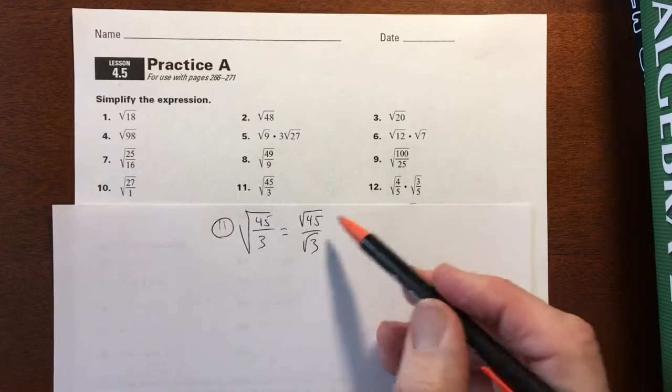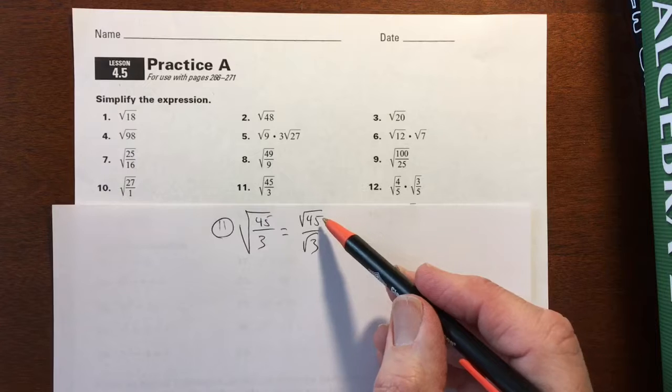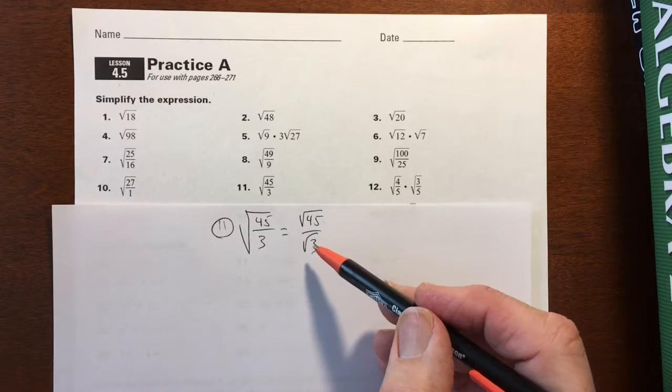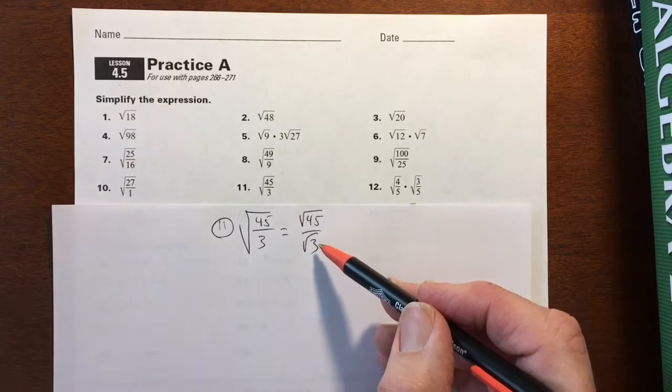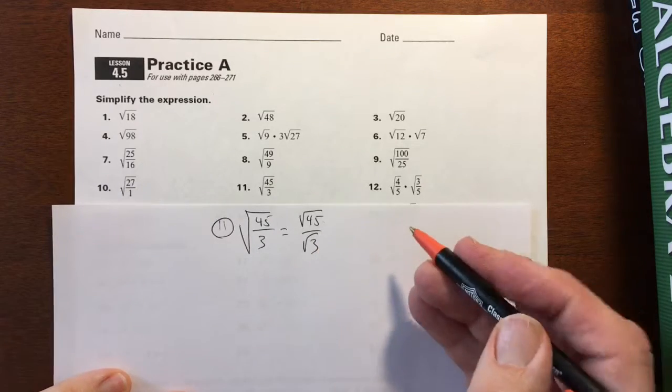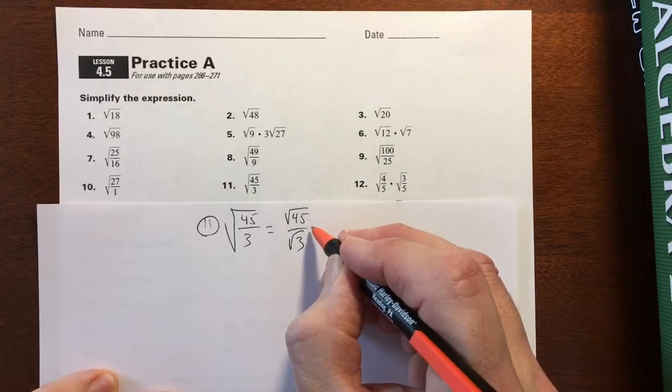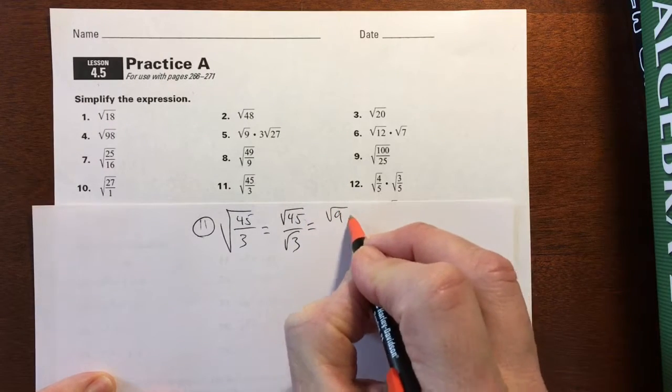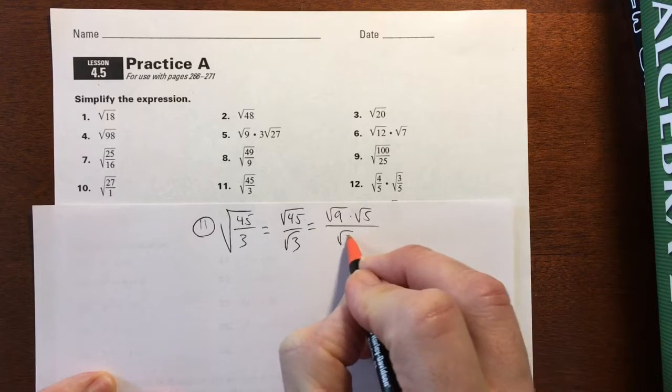So we've got to simplify the 45 and 9 is a perfect square you can use, but you can't have the radical in the denominator, so you have to rationalize that out of there. So I'll just simplify it a little further first. This could become square root of 9, square root of 5 over square root of 3.